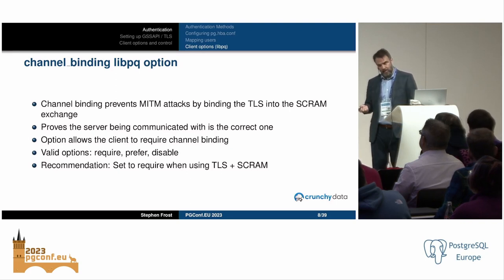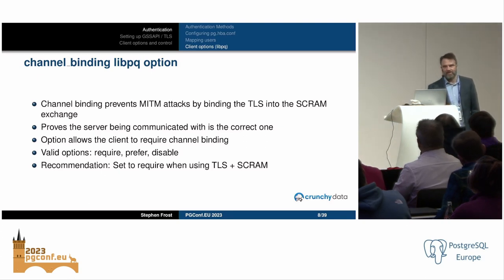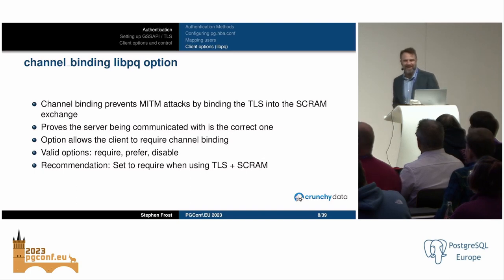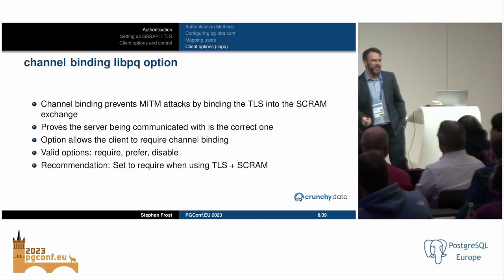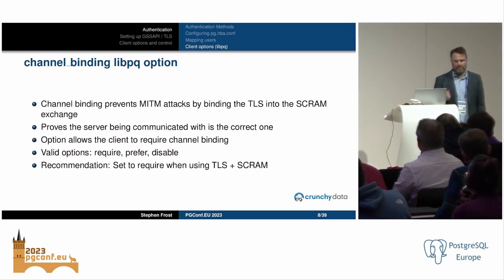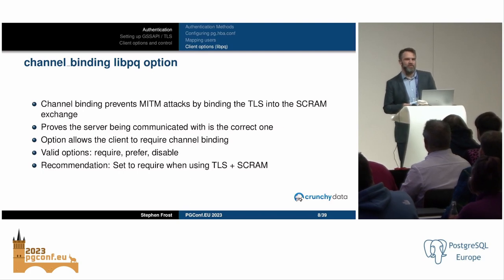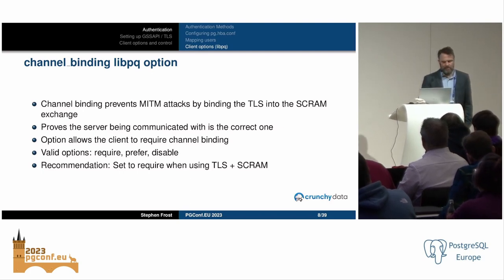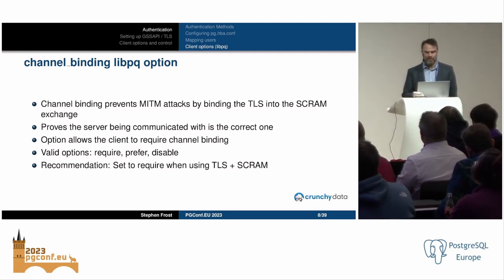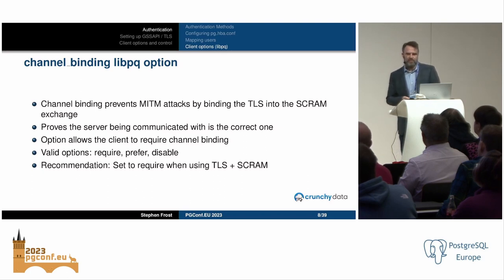People ask about PgBouncer and other proxies — and yes, channel binding won't work with those because those are man-in-the-middle by nature. It's a bit more complicated to deal with in those environments, but I do recommend using require when using TLS and SCRAM together.